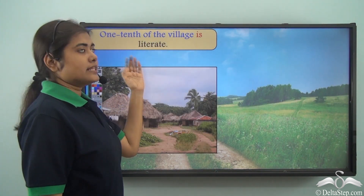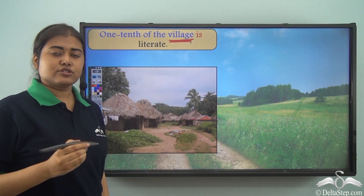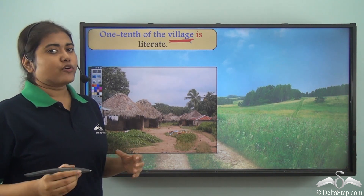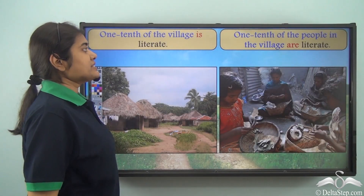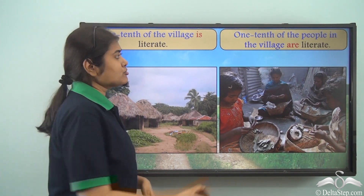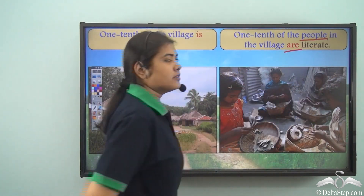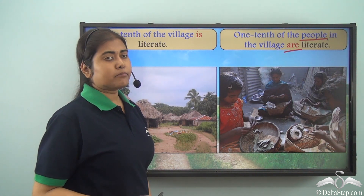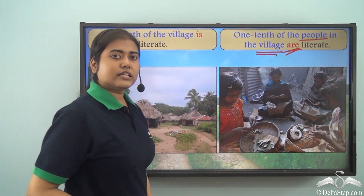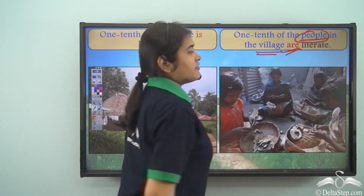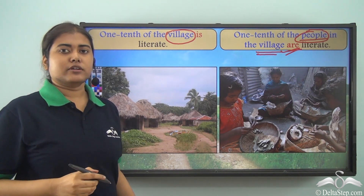'One tenth of the village is literate' — 'village' is a countable noun but we are talking about one village, a part of a whole unit, so we use the singular verb 'is.' But 'One tenth of the people in the village are literate' — 'people' is a countable noun in plural number, so we use the plural verb 'are.' Note that in this sentence the verb is determined by 'people,' not by 'village.'